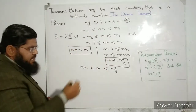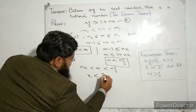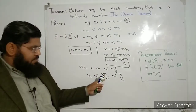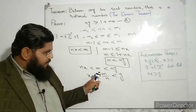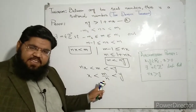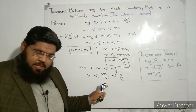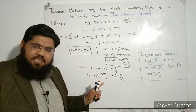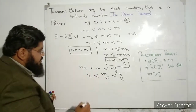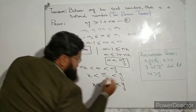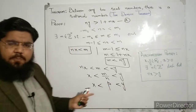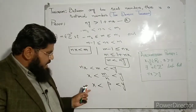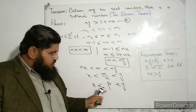Combining the two inequalities nx is less than m and m is less than ny, we get nx is less than m is less than ny. Applying simple algebraic manipulation, dividing through by n, we get x is less than m over n is less than y. The number m over n is written as a ratio of two integers with n non-zero, so it is a rational number. Therefore, between the two real numbers x and y there exists a rational number. This completes the proof of the density theorem.